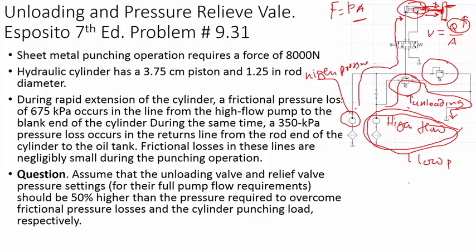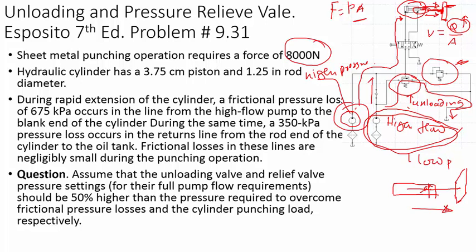When the cylinder is fully extended and the punch reaches the sheet metal, the high-pressure pump holds the pressure and maintains about 8000 Newtons of force to perform the punching operation. The question asks how to set the unloading valve pressure and the pressure relief valve pressure. When the cylinder is moving fast, there is a lot of fluid motion — friction losses on the blank side of about 675 kilopascals and on the rod end of about 350 kilopascals.